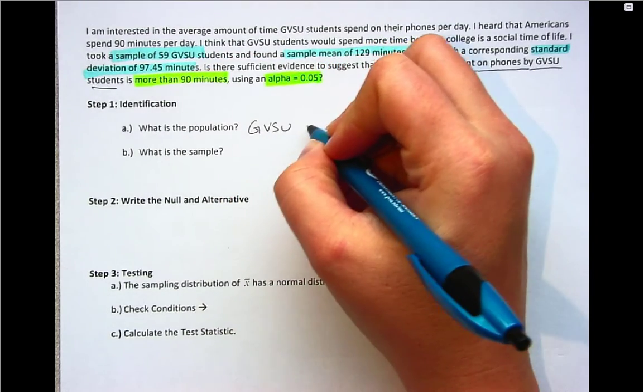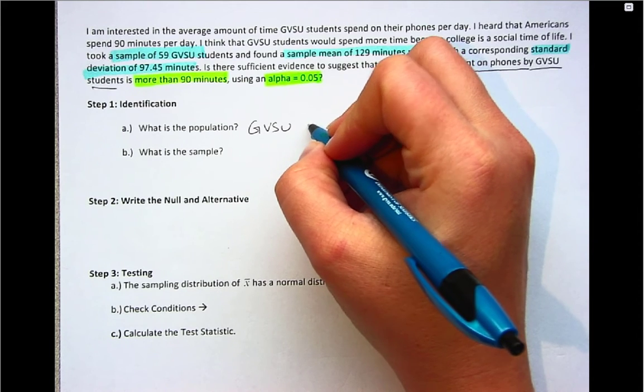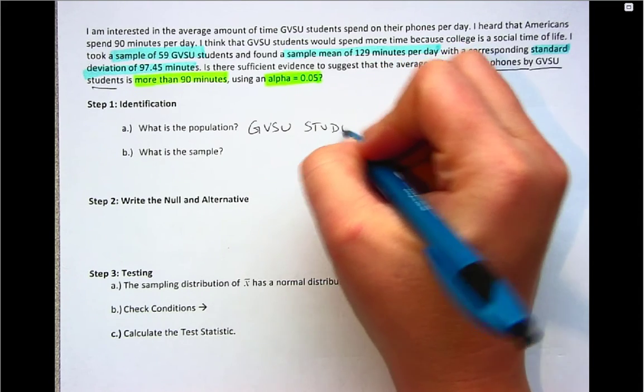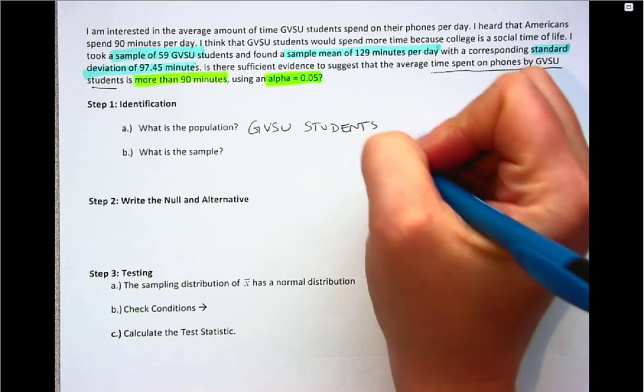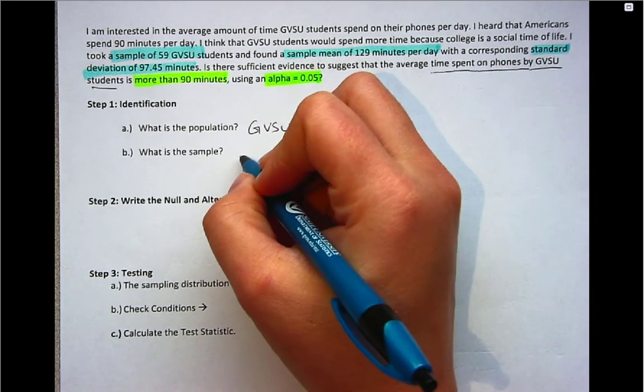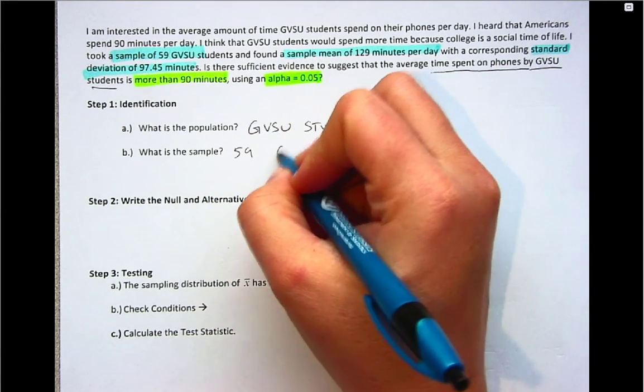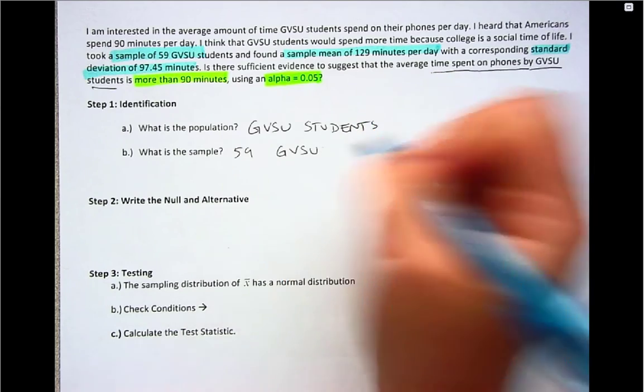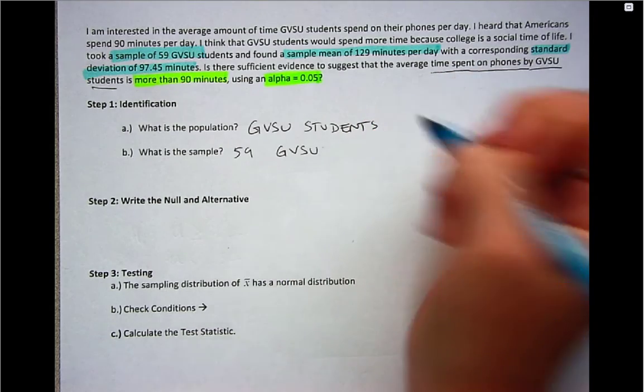So as we just said in step one, we're identifying the population as being GVSU students, and then the sample is going to be the 59 GVSU students that the data is based off of.